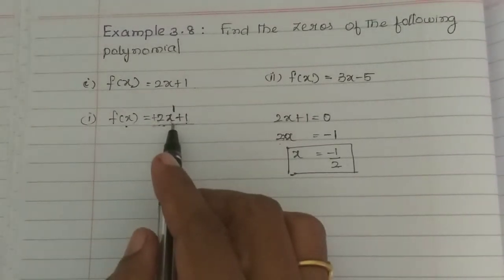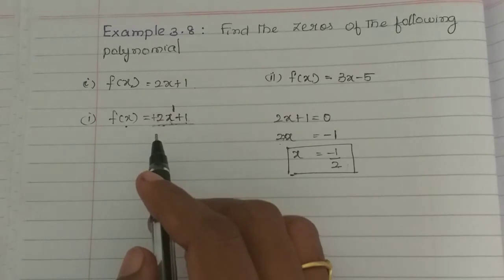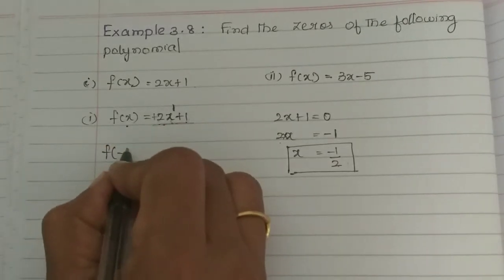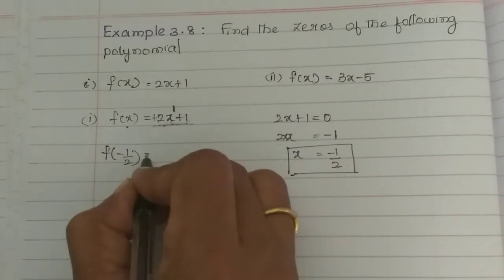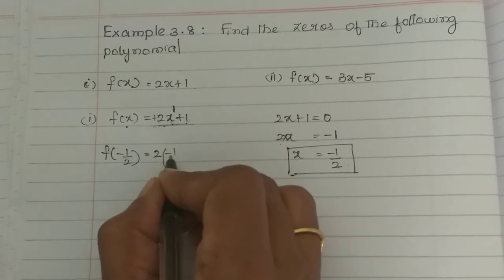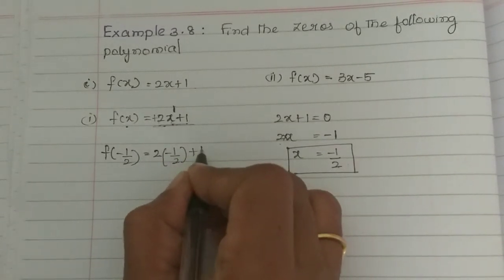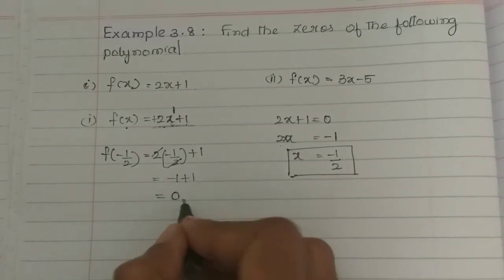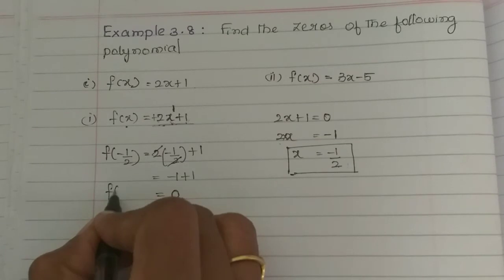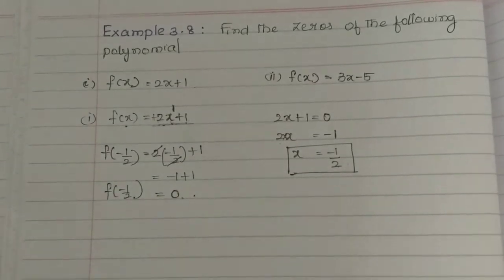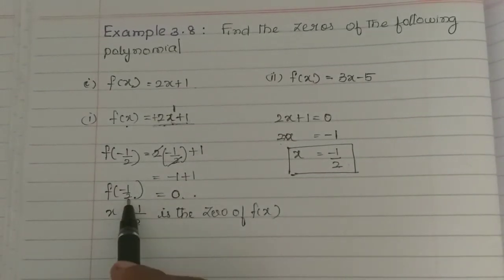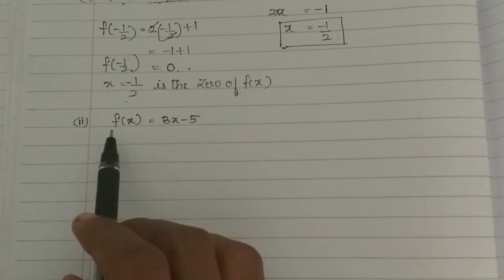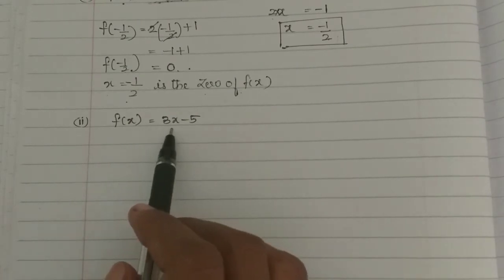This value is 0. Then x is equal to minus 1 by 2. Now f of x is equal to f of minus 1 by 2. That means 2 into minus 1 by 2 equals 0. So x equals minus 1 by 2, and f of minus 1 by 2 is equal to 0. Therefore x equals minus 1 by 2 is the zero of f of x.